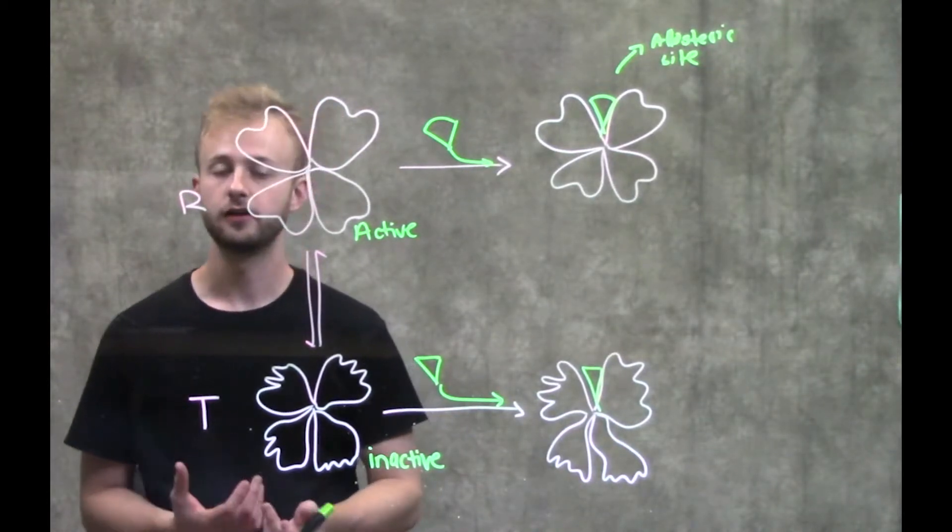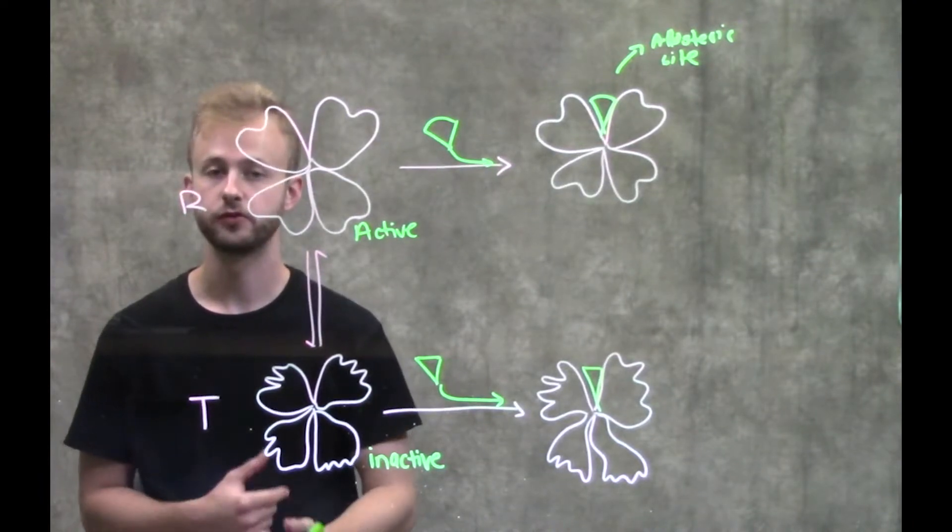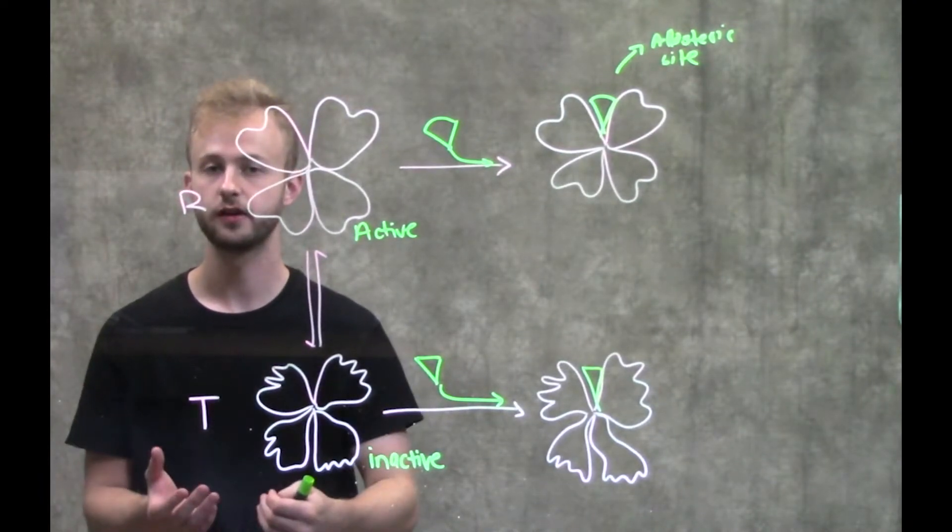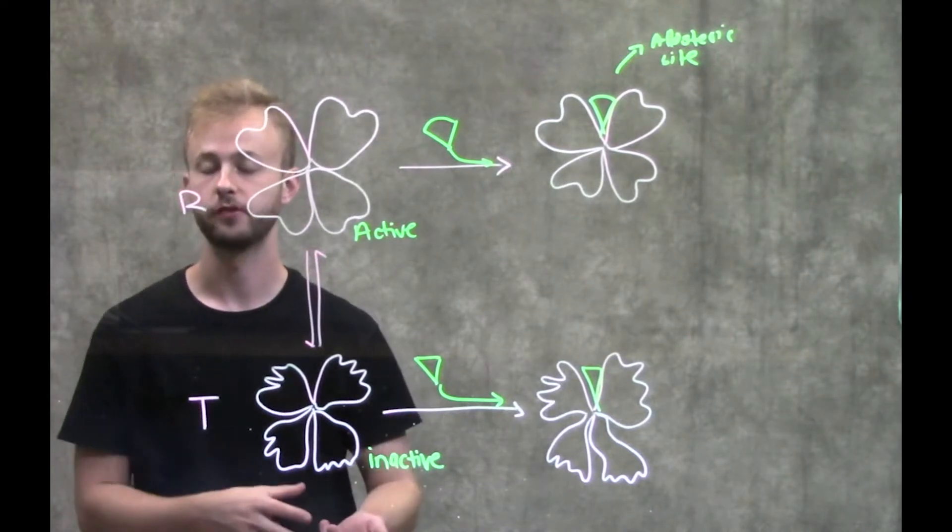Just to review, all allosteric enzymes are multi-subunit enzymes that are all communicating with one another through cooperativity.